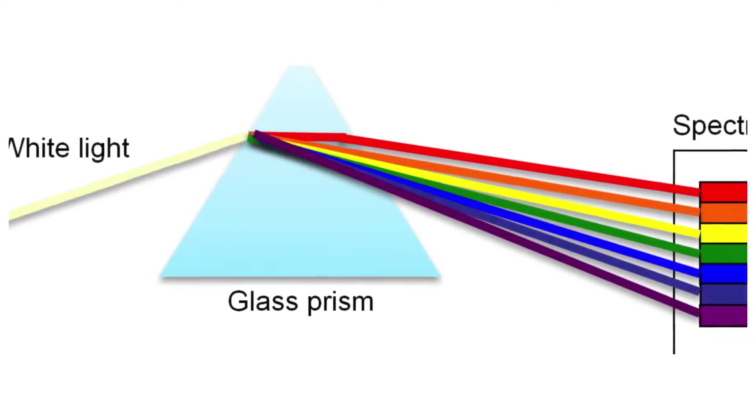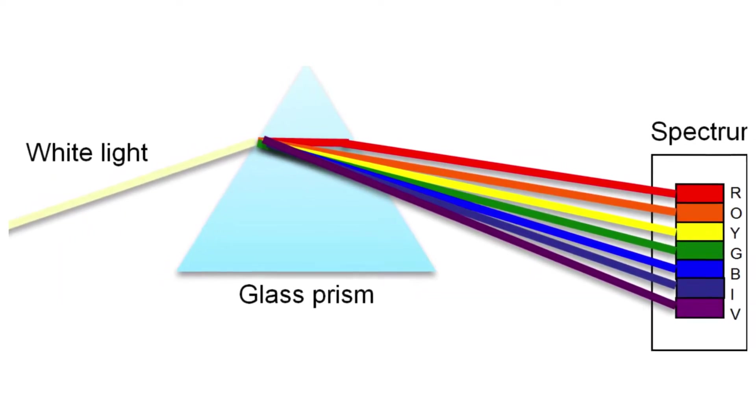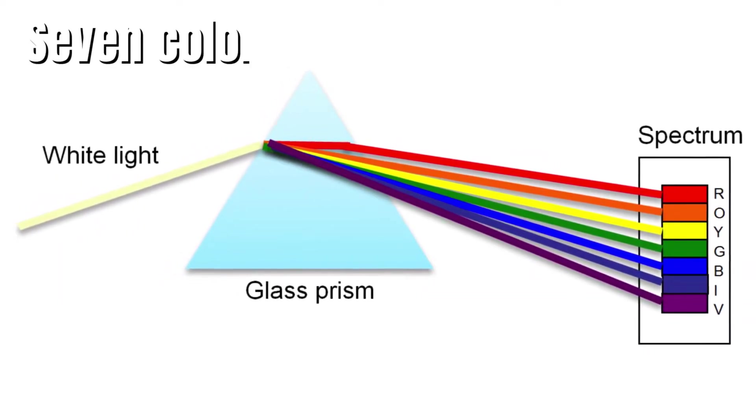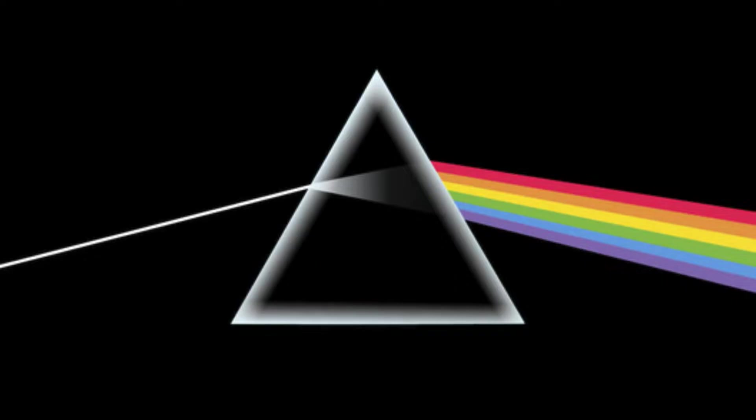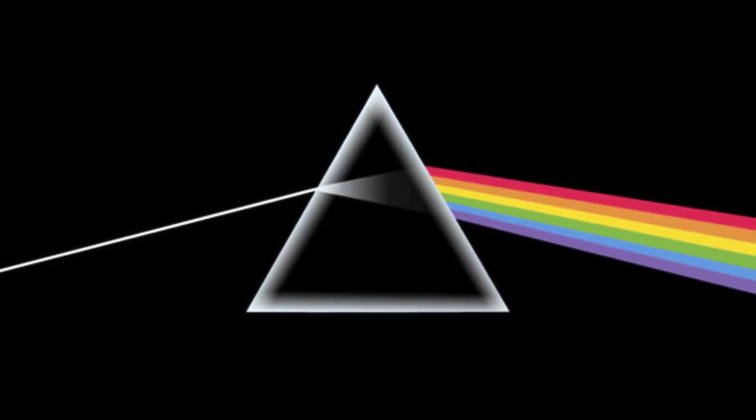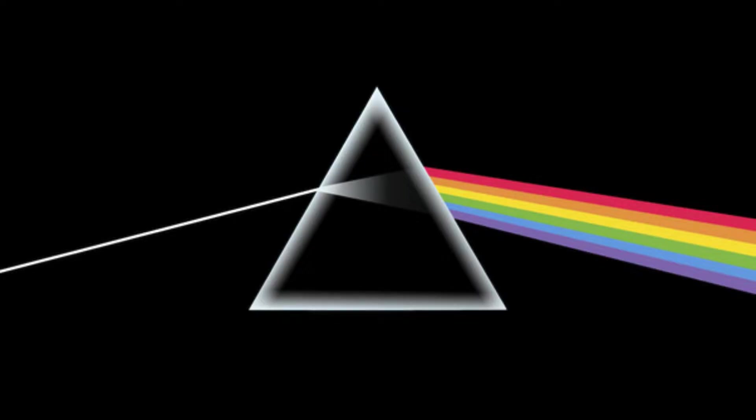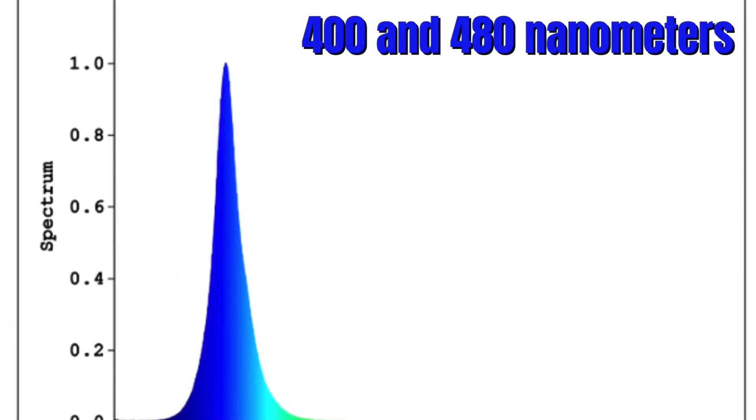The visible part of white light, like sunlight, is primarily made from seven colors. Each color has its own unique wavelength, a measure of the distance between light waves. Blue light sits towards the shorter end of the spectrum, with a wavelength range roughly between 400 and 480 nanometers.